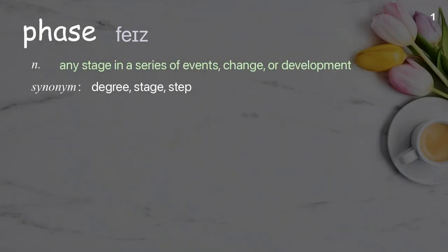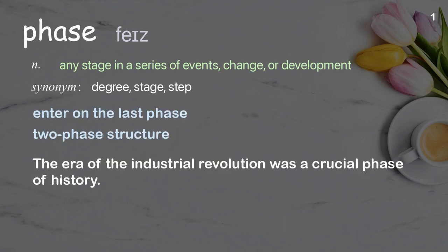Phase. Any stage in a series of events, change, or development. Examples: Enter on the last phase. Two-phase structure. The era of the Industrial Revolution was a crucial phase of history.